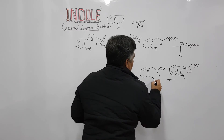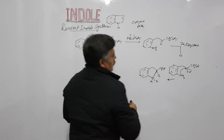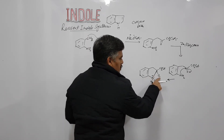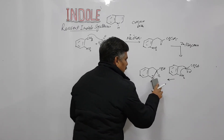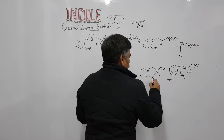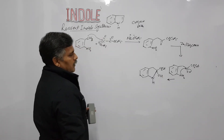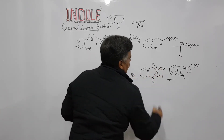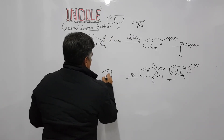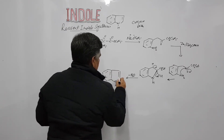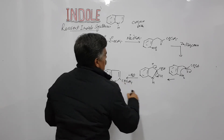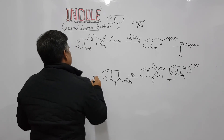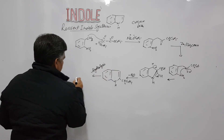The lone pair of the amino nitrogen attacks at the carbonyl carbon, and the double bond shifts to oxygen. This gives a cyclic intermediate with CH2, CO2Et, NH2, and OH groups. When nitrogen forms four bonds it carries a positive charge, and the negative charge on oxygen is compensated by hydrogen transfer. Dehydration then occurs — water is removed — giving a compound with the carbethoxy ester group attached to the newly formed indole ring.